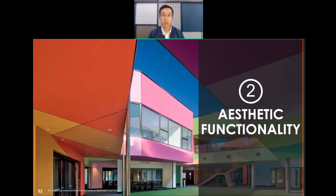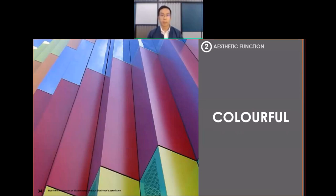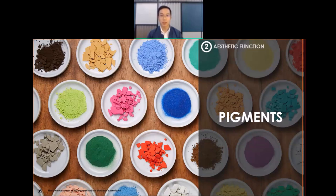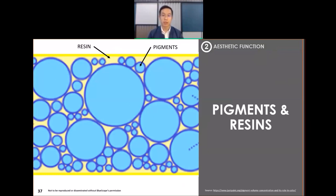The second functionality of steel finishes is aesthetics. In the market there are many types of finishes. The finishes can be very colorful, made out of pigments from different organic substances or even minerals. Different pigments give different color appearances. Resin acts as a binder that binds the pigment together, and together pigment and resin form an organic coating layer.